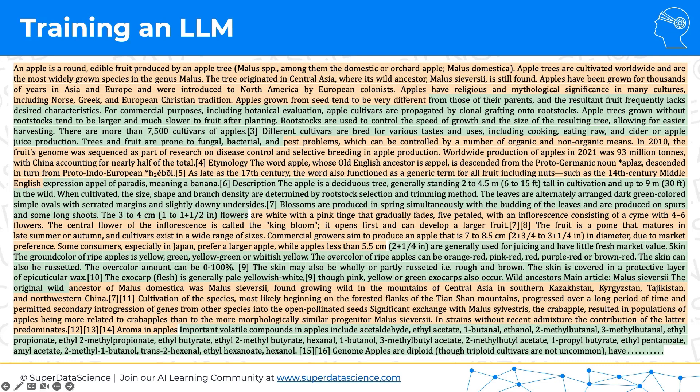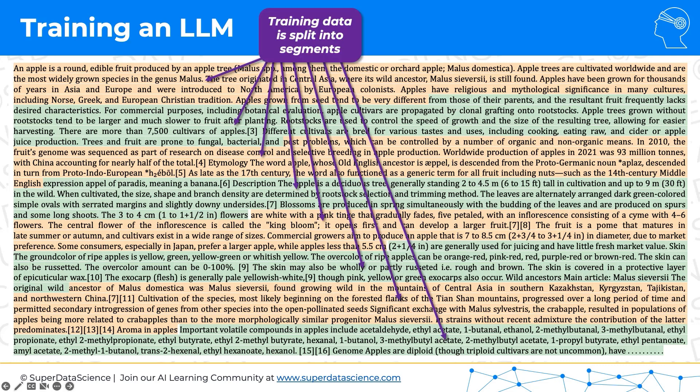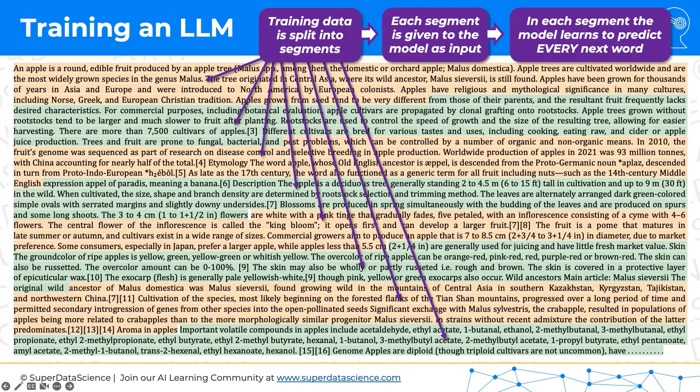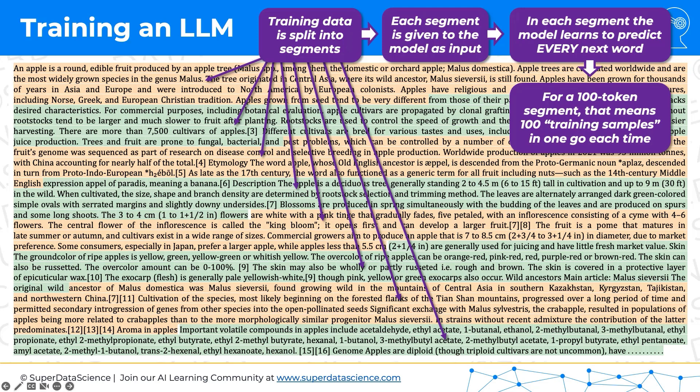Typically segments would be very big — we're going to take a segment of 100 words just for illustration purposes. The training data would be split into these segments, and each segment is given to the model as input. The transformer doesn't do this splitting — that's a separate algorithm. Then they're given to the transformer, and every single time the transformer would take a segment — in this case 100 words — the model will learn to predict every single next word. Same as we saw with seven words, same thing with 100 words. For a 100-token segment, that means 100 training samples in one go. Those 100 errors are all calculated as matrix multiplications, everything happens in one go, and as output we get these 100 errors.